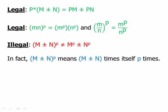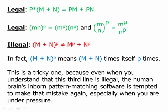In fact, (m plus or minus n) to the p means that we're taking what's in the parentheses — m plus or minus n — and multiplying it by itself p times. If these were variables, we'd have to FOIL out several times. It's just important to keep in mind that that's what it would be, not raising the individual terms to those powers. Even when you understand that distributing an exponent over addition is illegal, the human brain's pattern-matching is tempted to make that mistake again, especially under test pressure.